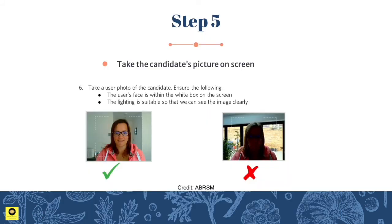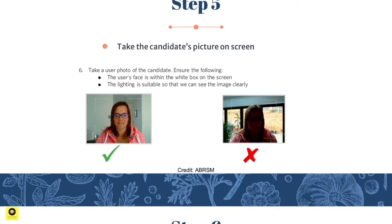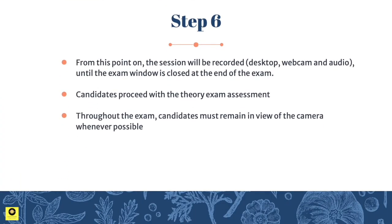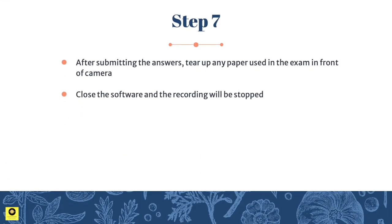For Step 5, take the candidate's picture on screen. Make sure the candidate's face is within the white box and the lighting is suitable. For Step 6, from this point on the session will be recorded — including the desktop, webcam, and audio — until the exam window is closed. Candidates proceed with the theory exam assessment and must remain in view of the camera whenever possible. After submitting the answers, tear up any paper used in front of the camera, then close the software to stop the recording.